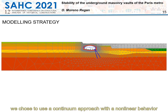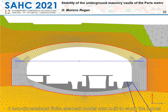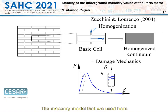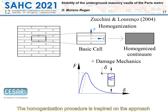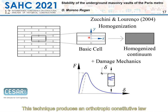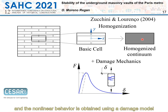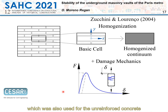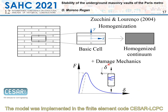Among the many ways to deal with a masonry problem, we chose to use a continuum approach with a nonlinear behavior. A two-dimensional finite element model was built to study the tunnel. The masonry model used here was developed in a previous work. The homogenization procedure is inspired by the approach proposed by Zucchini and Lourenço for masonry. This technique produces an orthotropic constitutive law, and the nonlinear behavior is obtained using a damage model, also used for unreinforced concrete. The model was implemented in the finite element code César-LCPC.